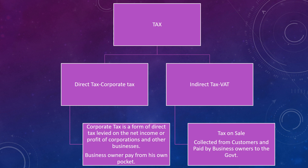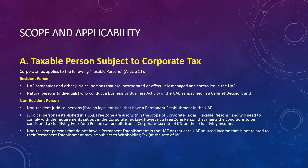Corporate tax is a direct tax — it is charged on the profit of the business and we pay that tax amount out of our own pocket. In the case of indirect tax, we collect tax from our customers and deposit those collected taxes to the government. Now we will talk about scope and applicability. There are mainly two broad categories of taxable persons: resident persons and non-resident persons. Resident persons include all UAE companies and other juridical persons incorporated in the UAE and effectively managed and controlled in the UAE, as well as natural persons conducting business activity in the UAE as specified in a cabinet decision, which we are still waiting for.